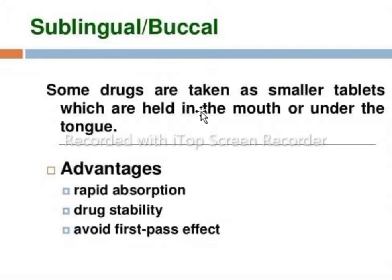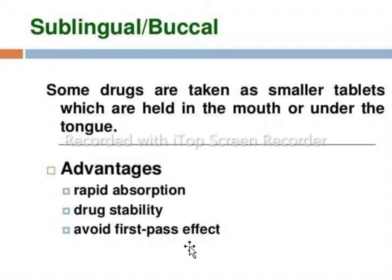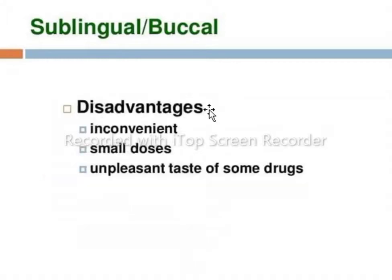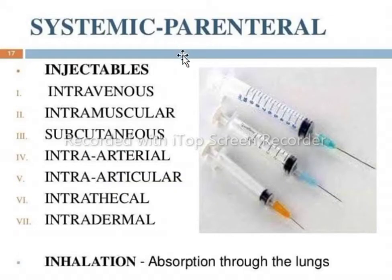Some drugs are taken as small tablets held in the mouth or under the tongue. The advantages of this route include rapid absorption — meaning quick action — drug stability, and avoidance of first pass effect through the steps of salivation, disintegration, dissolution, and absorption. The disadvantages are that it is inconvenient, limited to small doses, and unacceptable to some patients because of the unpleasant taste of certain drugs.